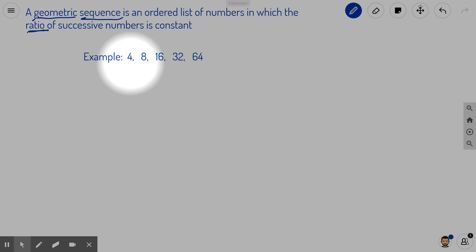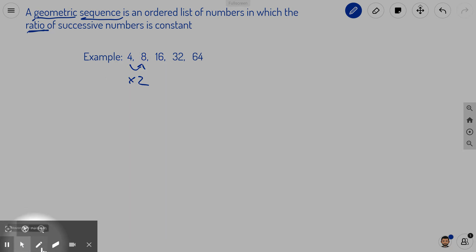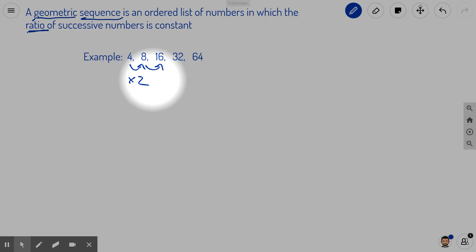It just means that when you go, in our example, from one number to the next, you're multiplying by the same thing each time. So to get from four to eight, that's times two. And if you want to go from eight to 16, you're also doing times two.